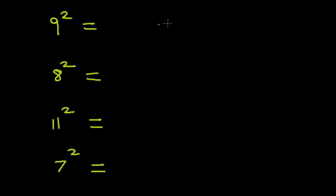Using the Niklam method, we have to select a base. Since all these four examples are closer to the number 10, we'll select the base as 10. If they were closer to 100, we would select 100. If they were closer to 1000, we would select 1000. So in this case, our base is 10.